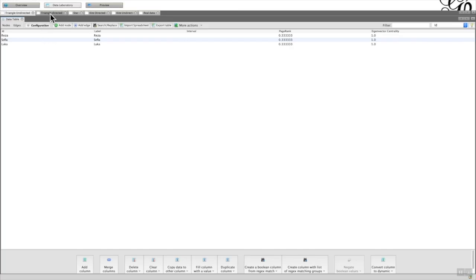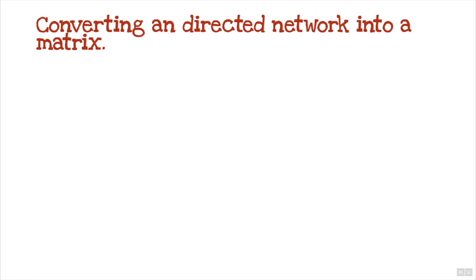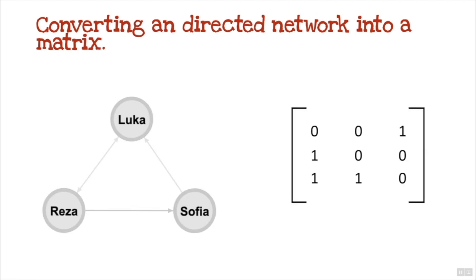Now if we go back and look at the directed version, it's slightly different. We've got the network as we saw, so in this case Reza has got one link to Sofia and one link to Luka, Sofia has got one link because it's directed to Luka, and Luka has got one link to Reza. That was slightly different to the earlier version - the undirected - because these two were filled in, but we don't have any backlinks back to Sofia and to Reza from Sofia to Reza. That's why they were not filled in.